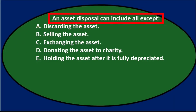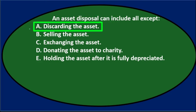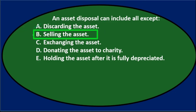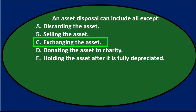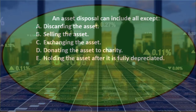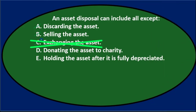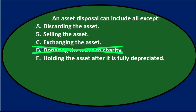An asset disposal can include all except — when we think of disposal we're getting rid of the asset in some way. We can discard it, so A seems correct and is not the answer. B says selling it — we could sell it at the end, maybe even for scrap, so that's a form of disposal. C says exchange the asset, which is really just another form of sale — we could exchange it for something else, kind of like a sale.